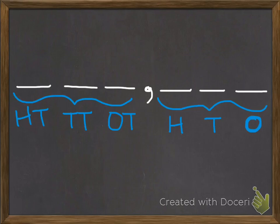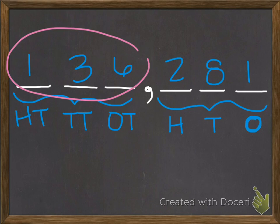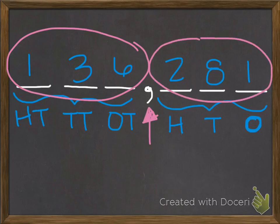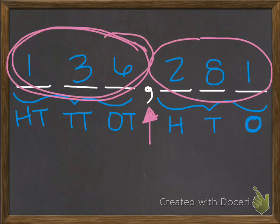If I put in a number. Whenever I'm reading a number, I look at each period first. So, the first thing I do is I read the thousands period. One hundred thirty-six. Then, the comma tells me to say the word thousand. Then, I read the ones or units period and it says two hundred eighty-one. So, when I put it together to say the word, I say one hundred thirty-six thousand two hundred eighty-one.